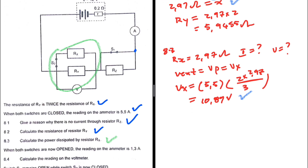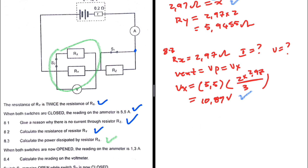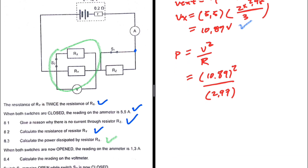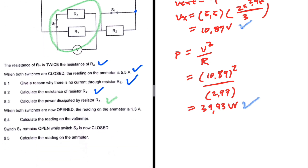So the voltage is 10.89 volts. For the power dissipated by Rx, we use P equals V squared over R, since we have both V and R. So P equals 10.89 squared divided by 2.97, which gives 39.93 watts. That is the power dissipated by resistor Rx.